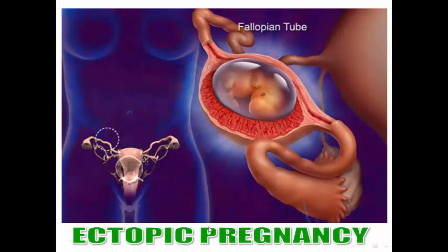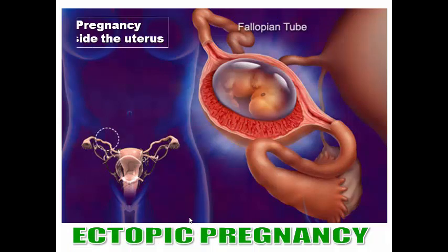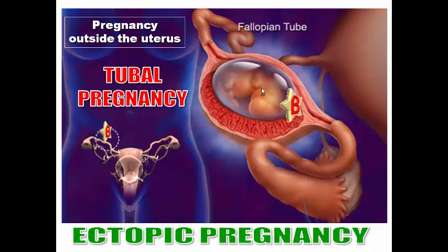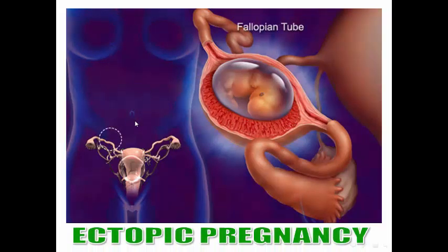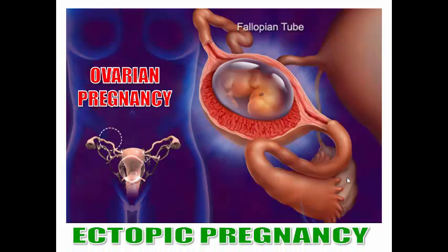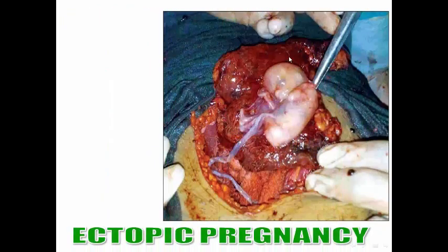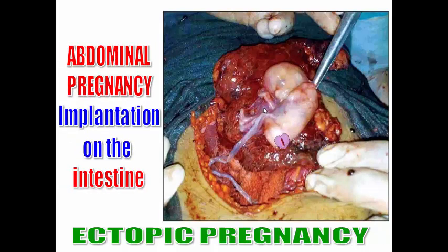Ectopic pregnancy is pregnancy outside the uterus. The commonest site is tubal pregnancy in the uterine tube, and the fate of tubal pregnancy is tubal rupture and internal hemorrhage. The second type is ovarian pregnancy — implantation of the blastocyst on the surface of the ovary — and it is rare. Then abdominal pregnancy: implantation and formation of the embryo on the surface of the intestine or stomach, also rare.